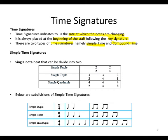Simple time signatures. They can be characterized as single note beats that can be divided into two. We have what we call simple duple time, where duple means two — that means two beats. We have simple triple time, where it means three beats in a bar. Then we have simple quadruple time, where quadruple means four beats in a bar.